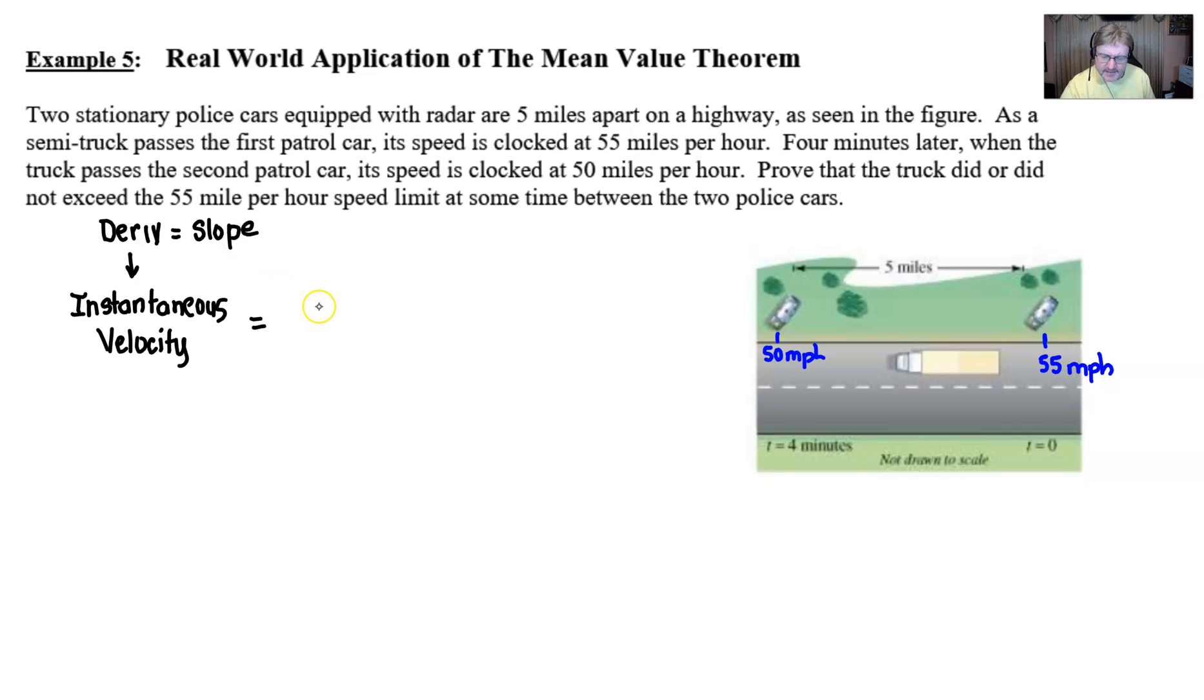Now, the slope is, just like it always has been, our average velocity in this case. So what we're basically going to show is that the average velocity is going to equal some instantaneous velocity that would exceed the speed limit.